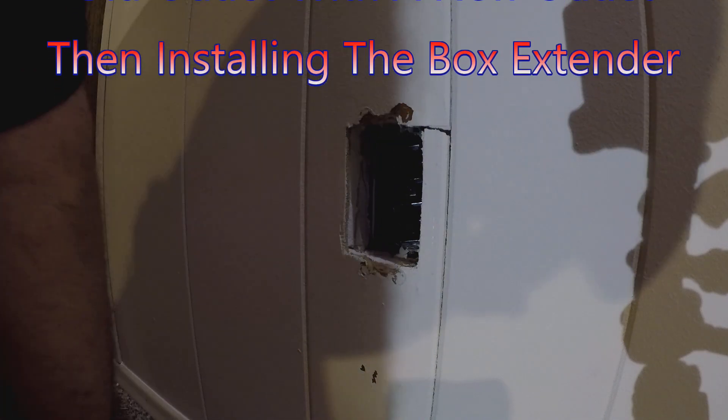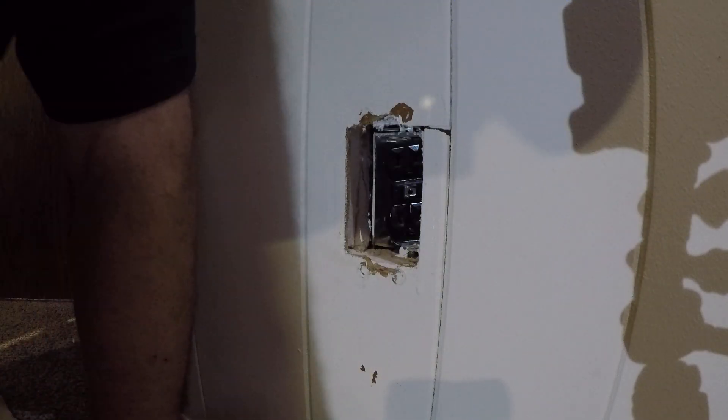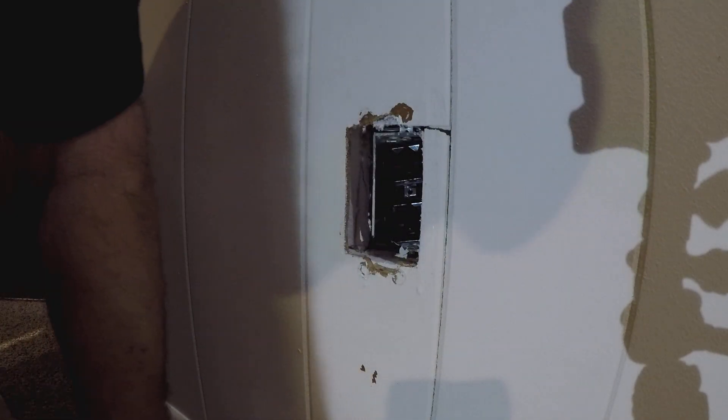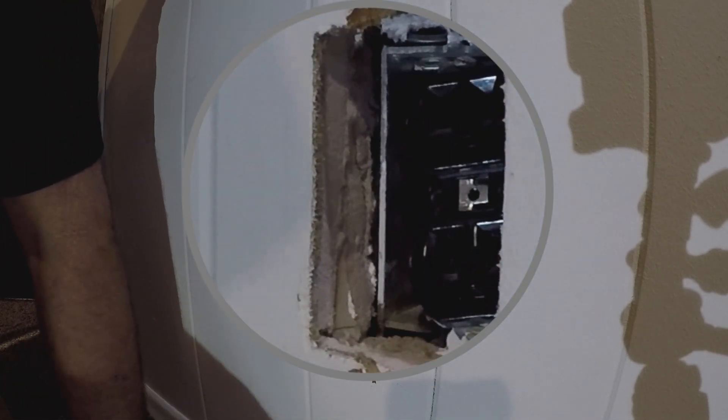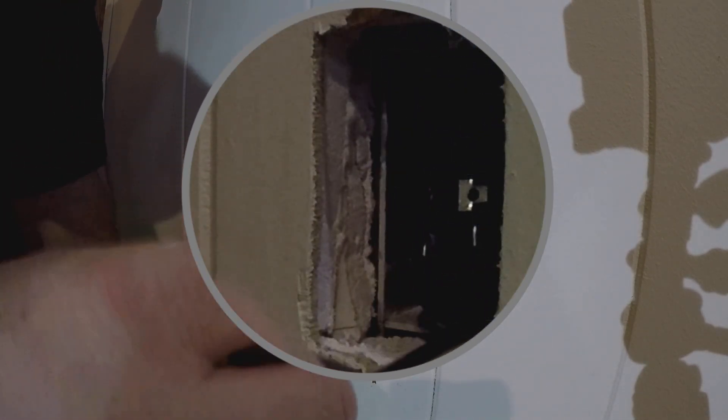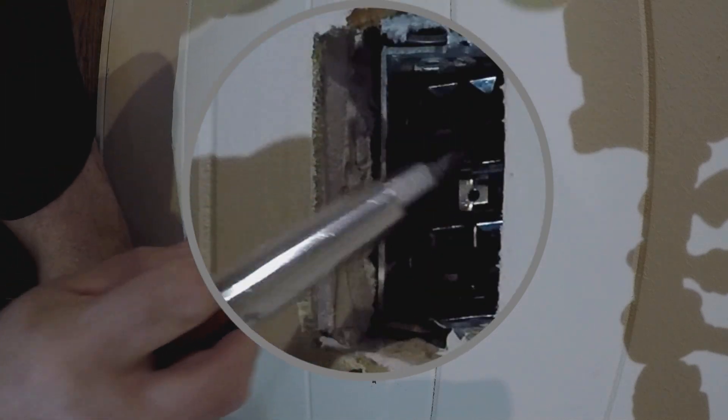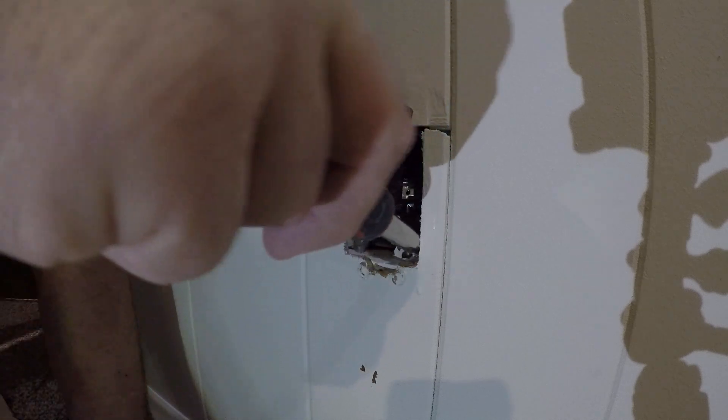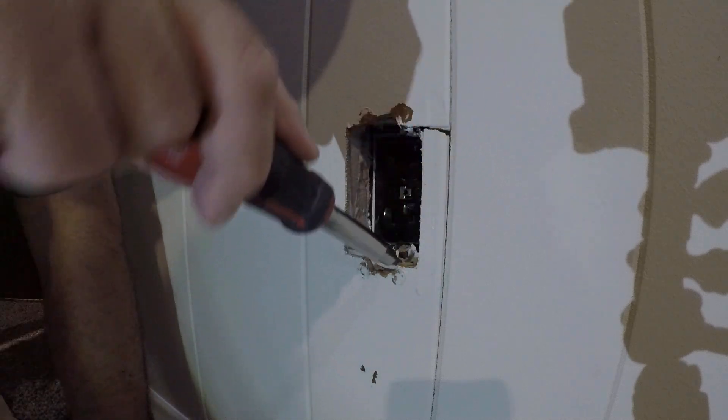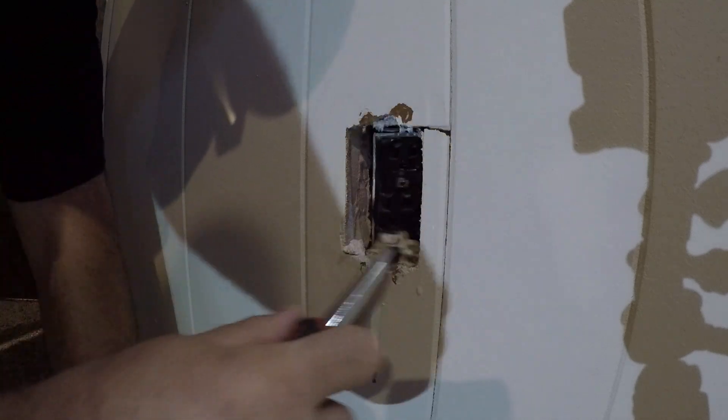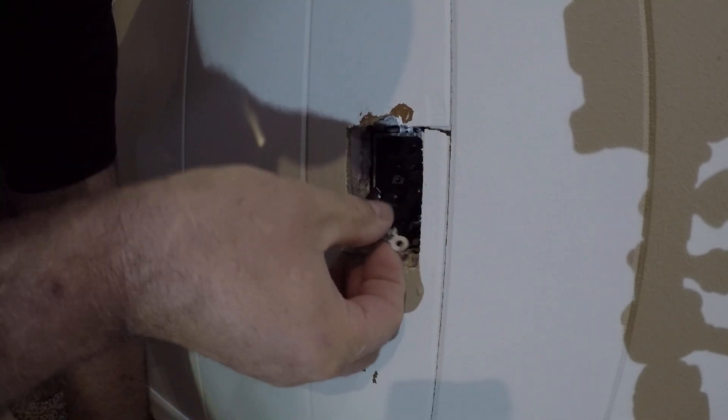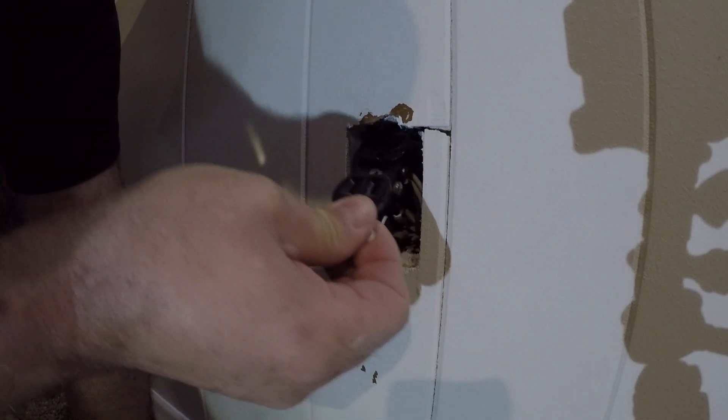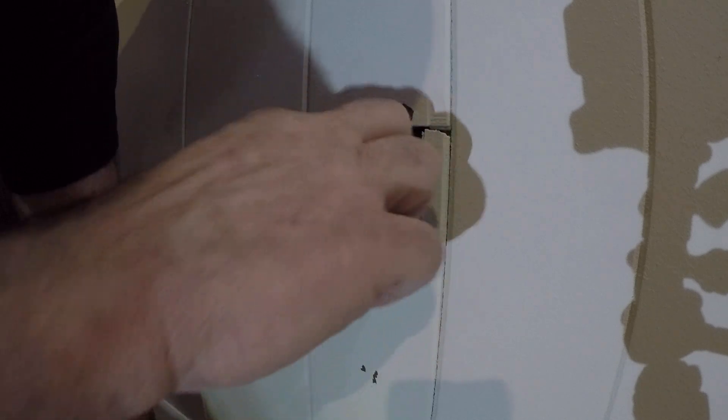We are going to change an outlet here. And as you can see, it is recessed. The box is recessed deeply into the wall. So we have to get this out of there and dig the outlet out from where it was stuffed in. Make sure you've turned your power off.